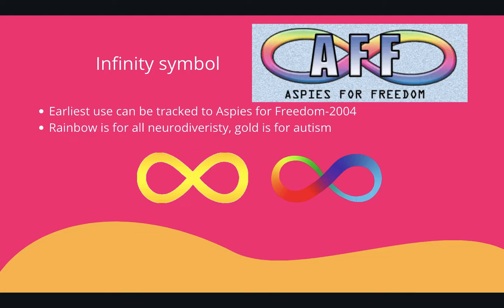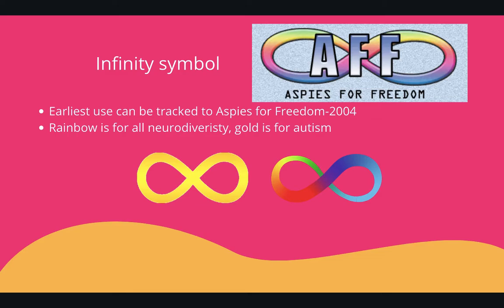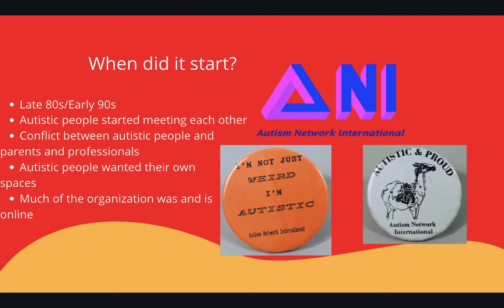The infinity symbol's origins can be traced back to 2004 when the autistic-led website forum Aspies for Freedom used it in their logo. The rainbow infinity symbol came before the gold infinity symbol. The gold infinity symbol is for autism specifically, because gold has often been associated with autism by autistic people — the chemical symbol for gold is AU, which are the first two letters of autism. The rainbow infinity symbol is for all neurodiversity, and it's still appropriate to use for autism since autism falls under the umbrella of neurodiversity.